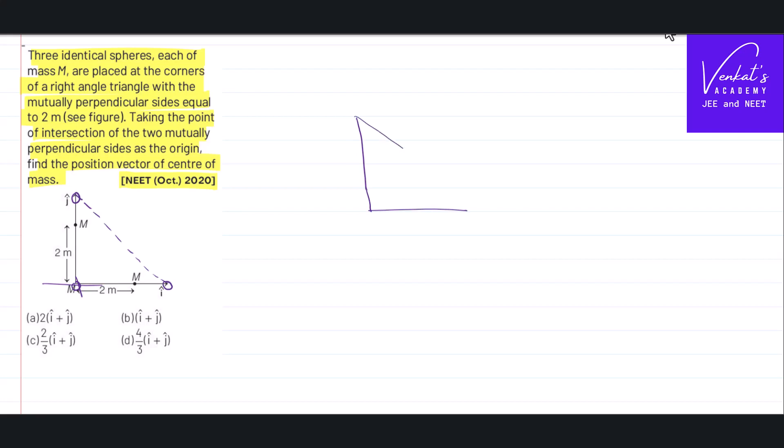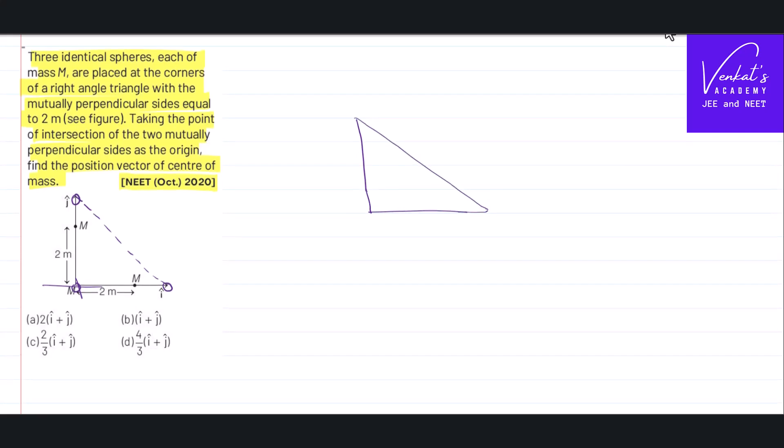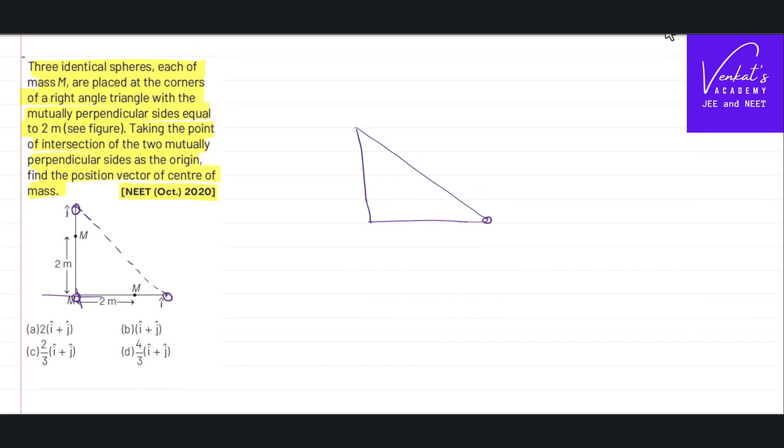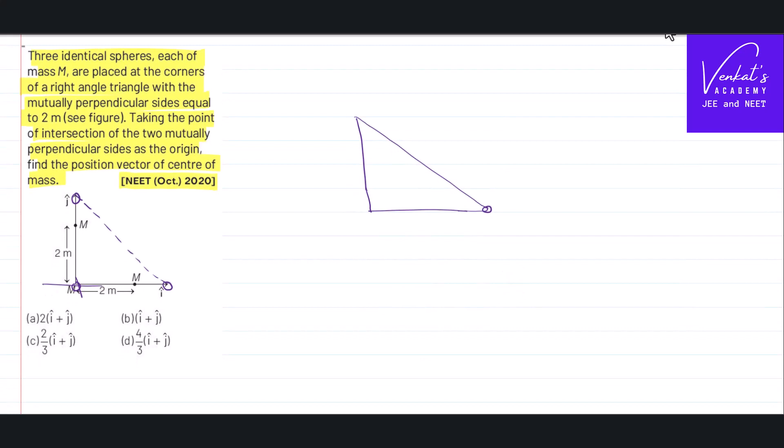So, this is what is being said. Here is a mass m, here is another mass m, and here is another mass m. This is given as 2 meters, this is given as 2 meters. This will become automatically 2 root 2 meters. Right angle triangle.